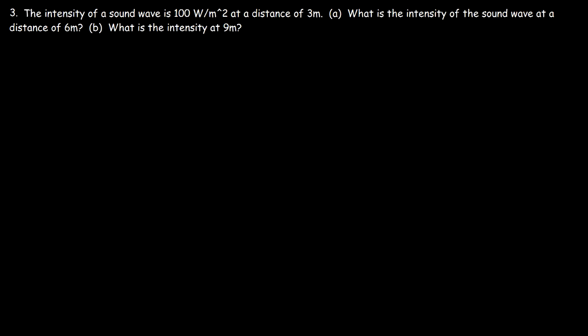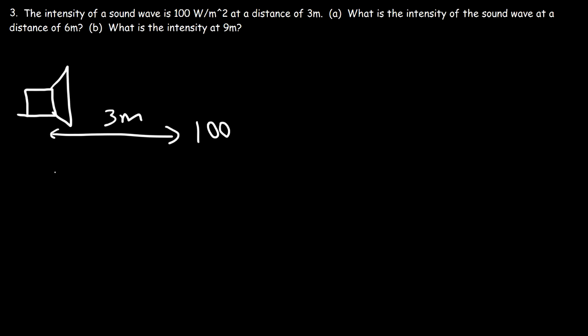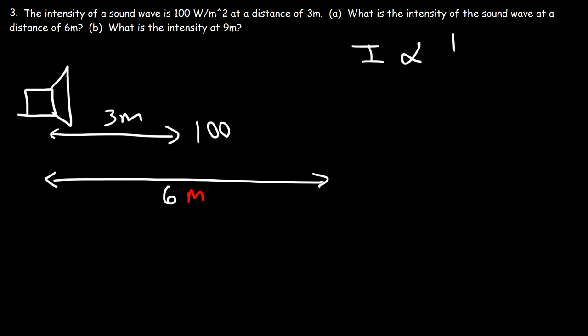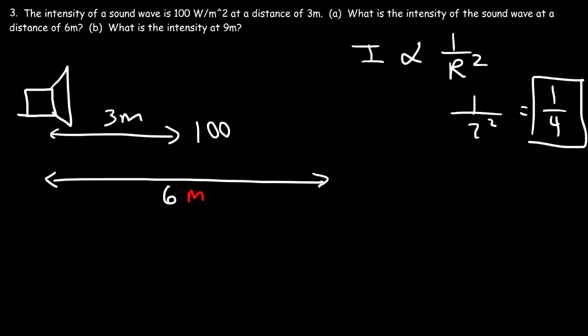Problem three: the intensity of a sound wave is 100 watts per square meter at a distance of 3 meters from the source. If we double the distance to 6 meters, what is the new intensity? There is something called the inverse square law, which states that intensity is inversely related to the square of the distance. If you double the distance, the intensity becomes one-fourth of its value — so 100 divided by 4 equals 25 watts per square meter.